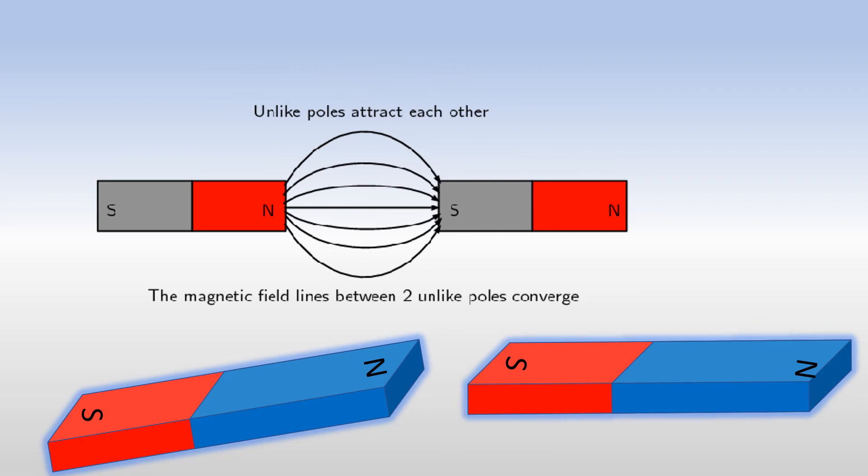Now let's see when the unlike poles come together. Here we have a north pole and a south pole of the magnets brought together. Now when two unlike poles come together, you already know that the unlike poles attract each other, right? When north pole and south pole come closer, they attract each other.